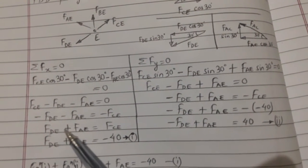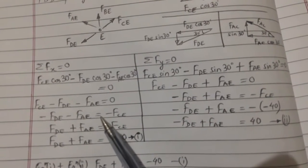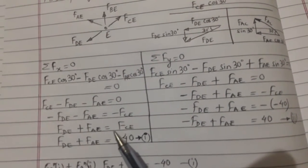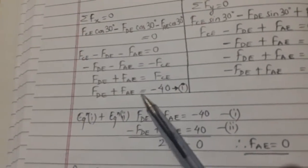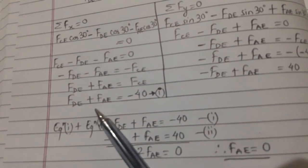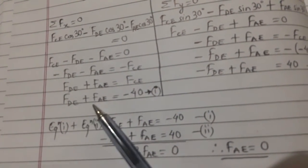Equal to zero. Then we simplified it and finally we got FDE plus FAE is equal to FCE. We know that FCE we got the value as minus 40, so we'll put it over here. This is equation one: FDE plus FAE equals minus 40.